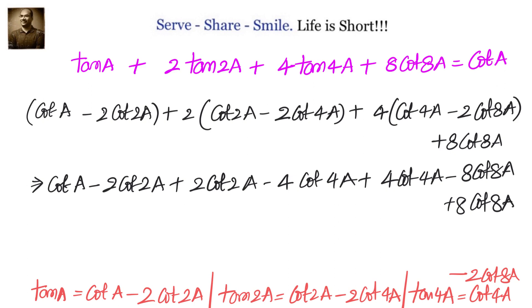Now we can see that all the terms will cancel other than cot a. Minus 2 cot 2a plus 2 cot 2a cancel. Minus 4 cot 4a plus 4 cot 4a cancel. Minus 8 cot 8a plus 8 cot 8a cancel. Left out is cot a.